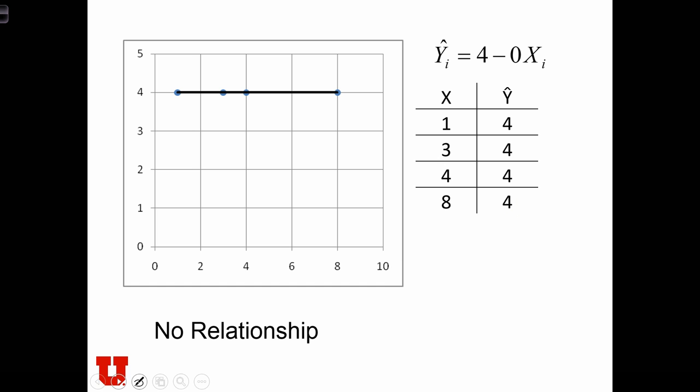And you'll see that that is going to produce a line with a 0 slope. In other words, there's no relationship between y and x. No matter what we choose for x, it's not going to impact the value of y. We know that y is always going to be predicted to be equal to 4.